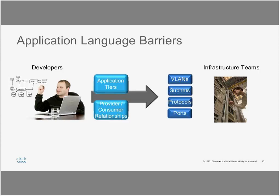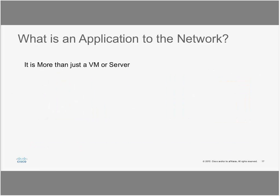The ACI architecture overcomes application-language barriers that exist today. Developers writing code don't understand the same networking concepts — VLAN, subnet, OSPF, BGP — that the infrastructure and network team deals with day to day. There's a barrier between how developers and the infrastructure team look at networking, and ACI was designed to overcome this.